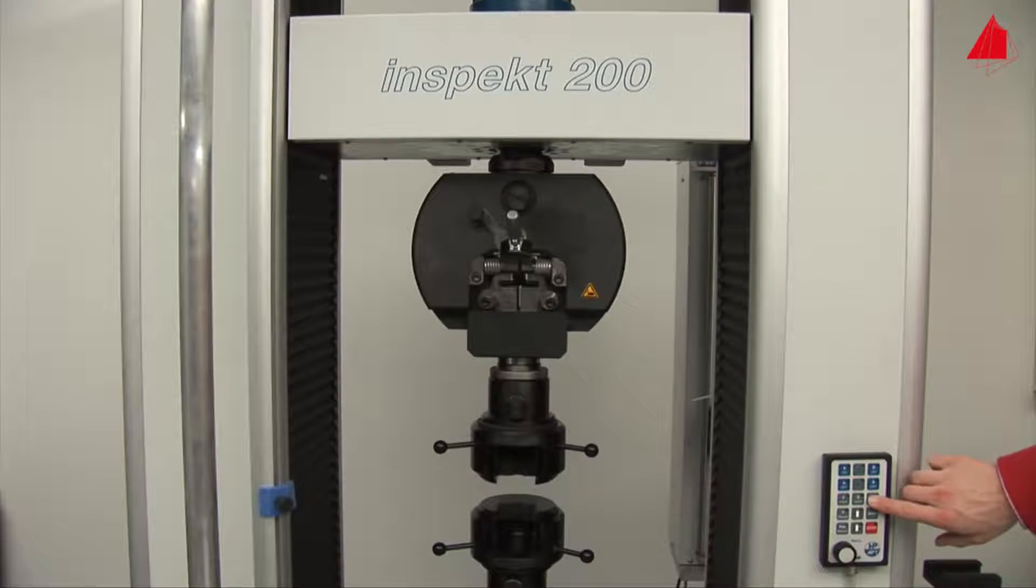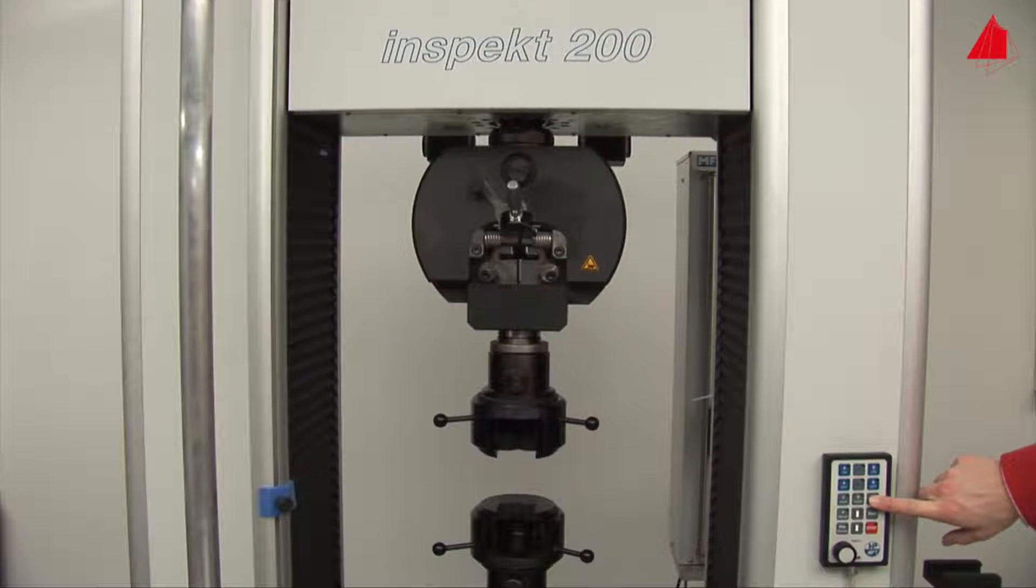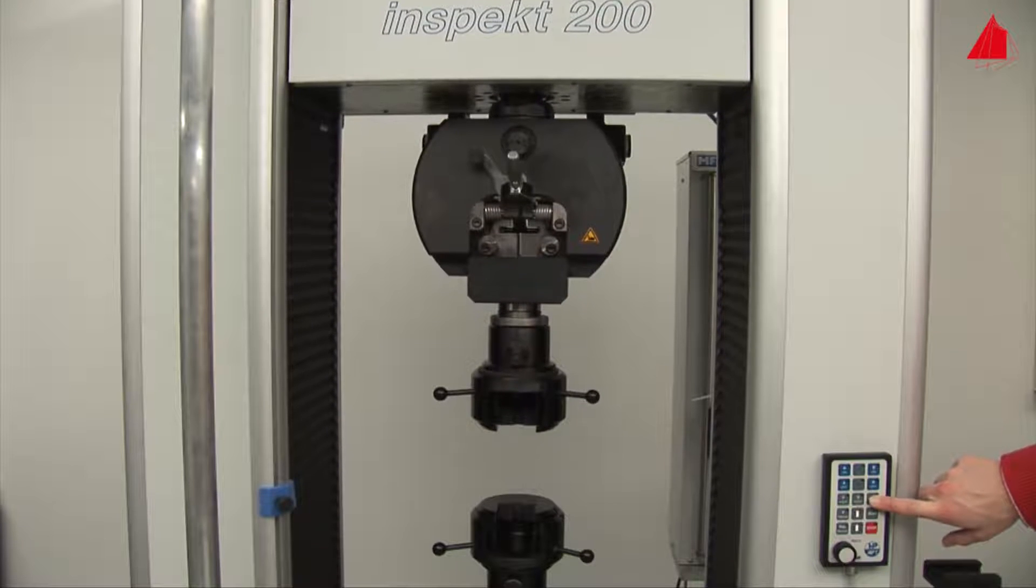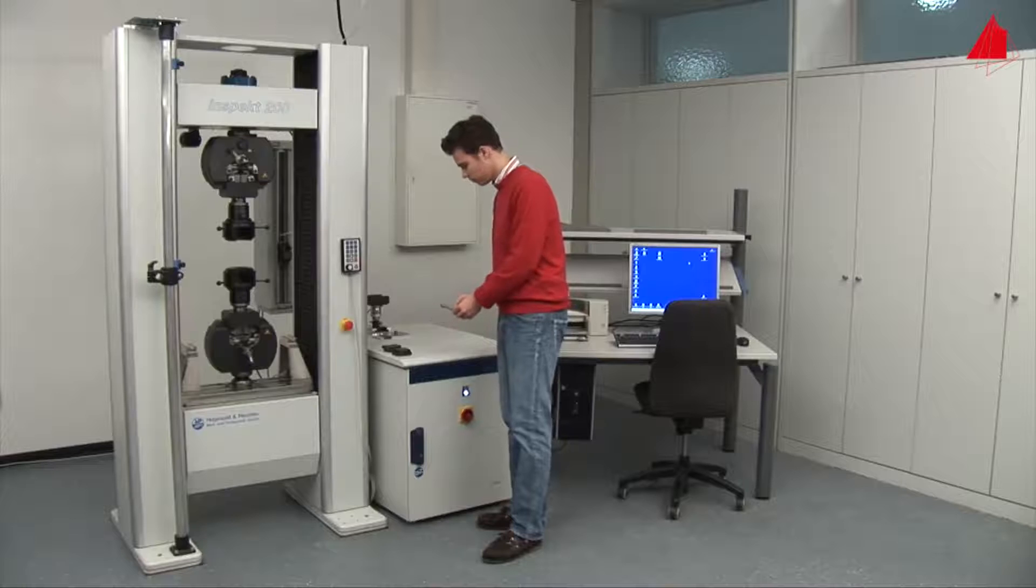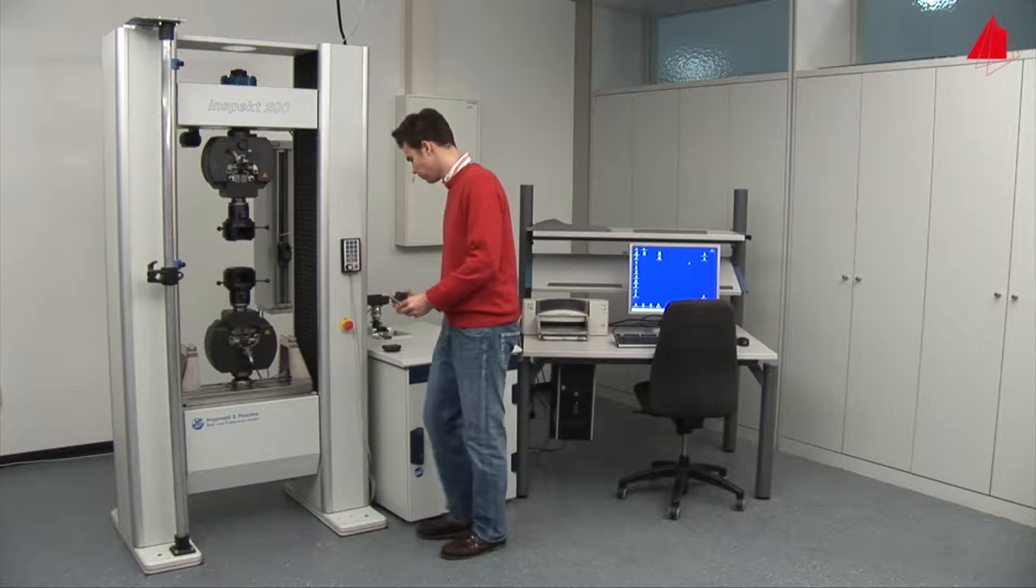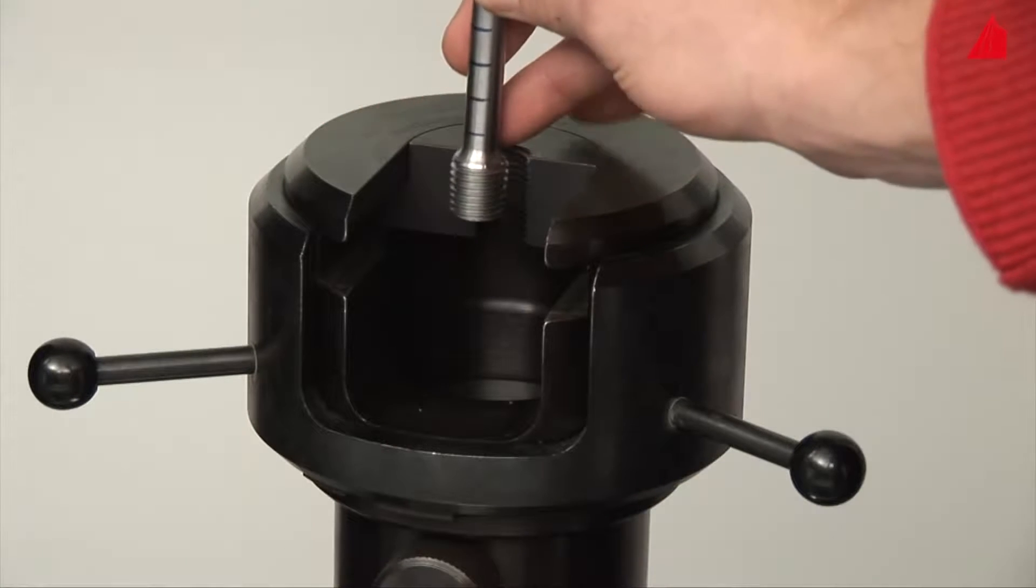Using a hand control, the tester moves the upper cross head into its correct starting position. Now he can place the threaded ends of the test piece in the lower and upper grips of the testing machine.